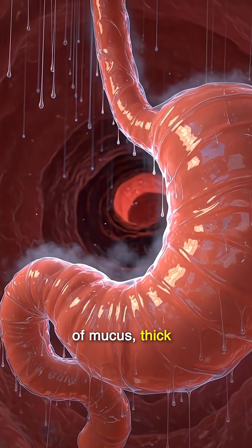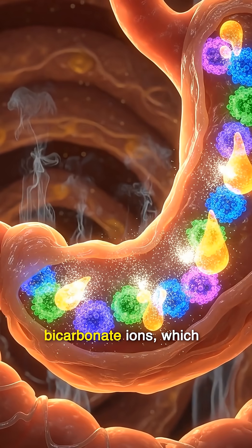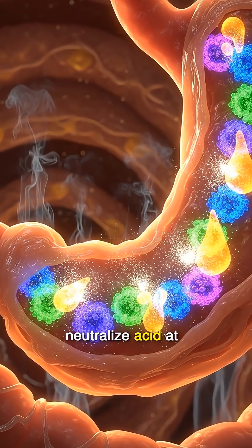There is another shield: a glistening layer of mucus, thick as a raincoat, soaking the lining in protection. This barrier is loaded with bicarbonate ions, which neutralize acid at the very edge of the tissue.